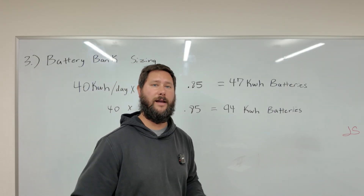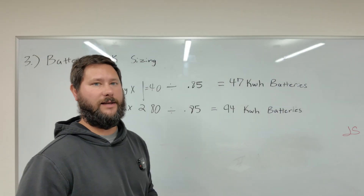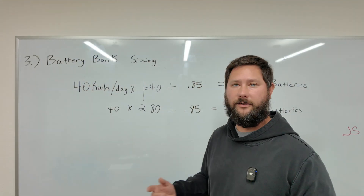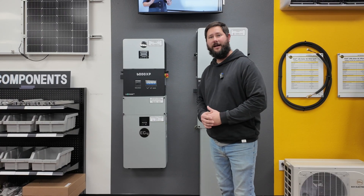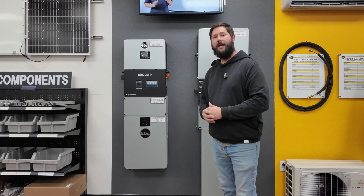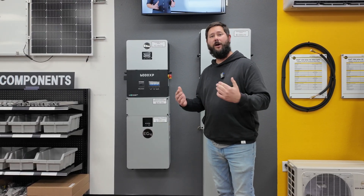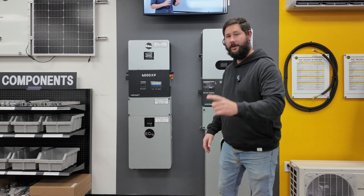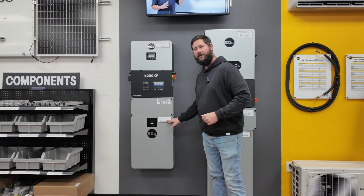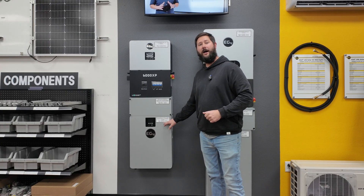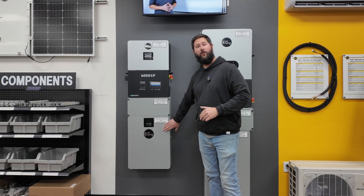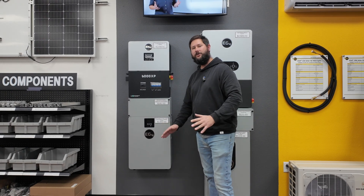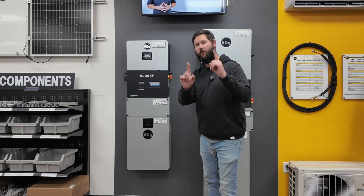That's what size our battery bank needs to be for two days of autonomy. For three or four days, you use the same formula. For one day of autonomy, we need about 47 kilowatt hours. Let's look at EG4's battery options. The first is the wall mount indoor battery — 100 amp hour, 5,120 watt hours. If we take 47 and divide by 5.12 kilowatt hours, we'd need about 9 or 10 of these batteries for one day of autonomy.